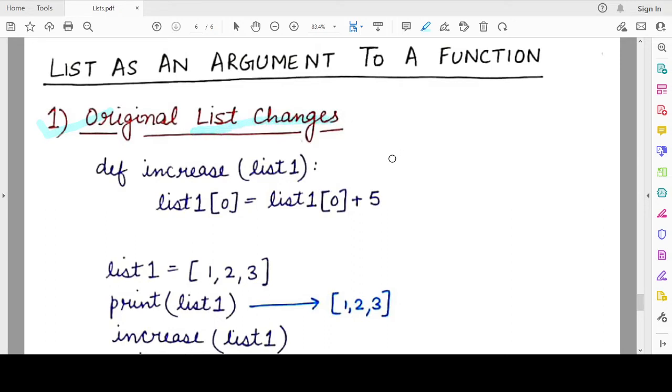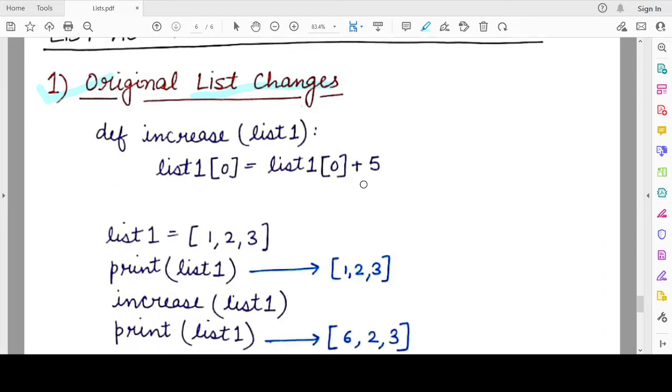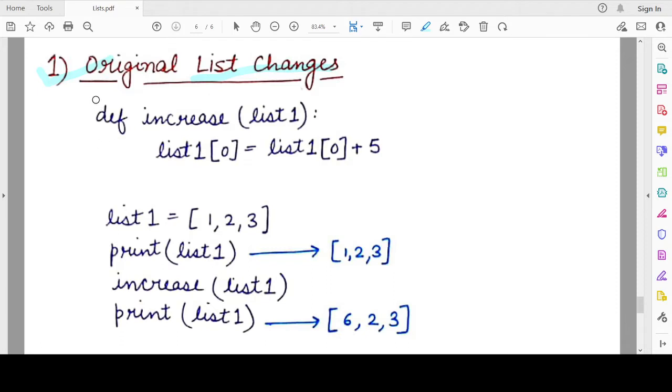What can be a situation when the original list that is passed as an argument changes? Here is a very simple program. It consists of a simple function named increase and I have passed list1 as an argument here. It contains a single statement that is modifying the first element of the list and adding 5 value to it.